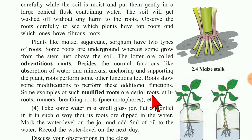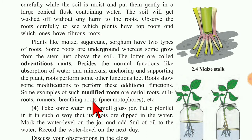Aerial roots absorb moisture from the air — that's why they are called aerial roots. Stilt roots perform the function of supporting the plant above the soil. Runners perform vegetative propagation — a type of plant reproduction — so the plant reproduces through these running roots. Breathing roots, as the name suggests, perform the function of breathing.